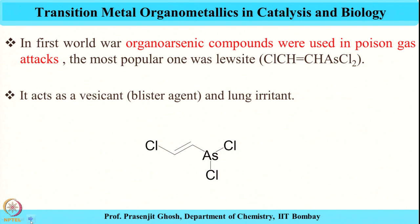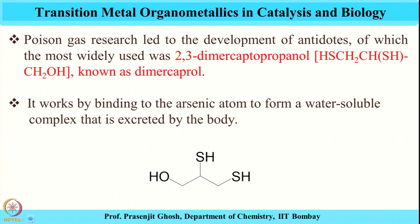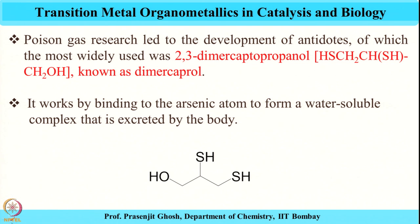Another interesting arsenic organometallic compound was used for a negative purpose — as a poison gas in the First World War. These compounds are lung irritants and cause blister formation. As a remedy, antidotes using dithiol ligands were developed to provide relief from this arsenic poison gas. So here we see both good and bad applications of organometallic compounds.